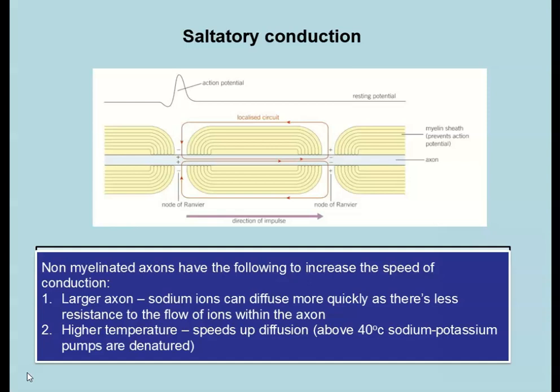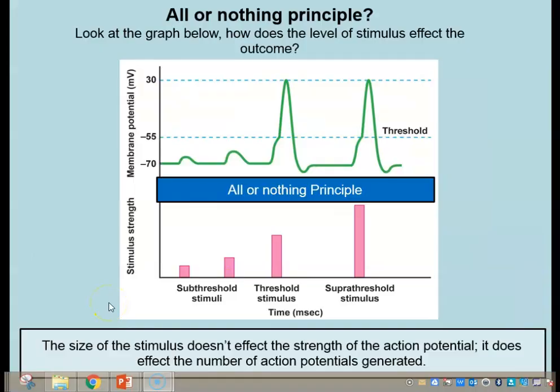Another factor is temperature — increasing temperature around those neurons speeds up the diffusion of sodium ions. However, once we reach around 40 degrees Celsius, the sodium-potassium pumps and the voltage-gated channel proteins begin to denature because they are made from proteins. So temperature only increases conduction speed up to a particular point.